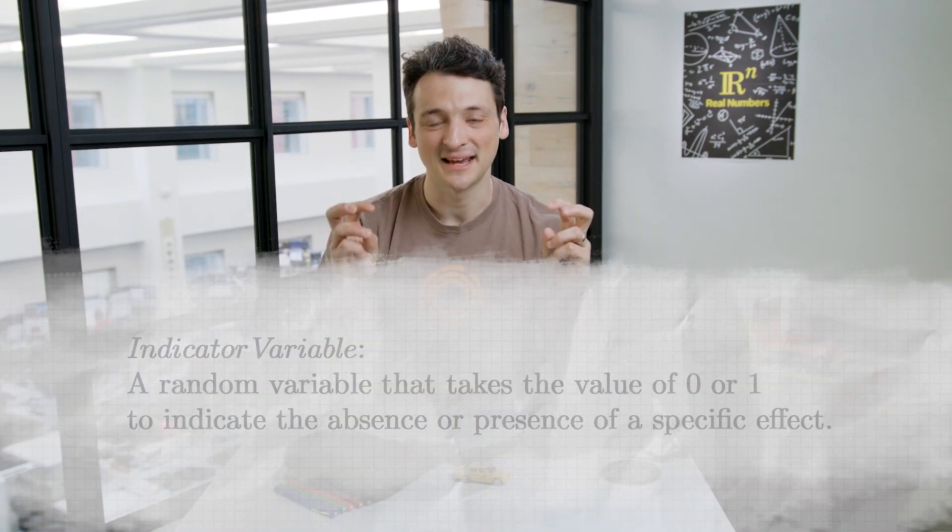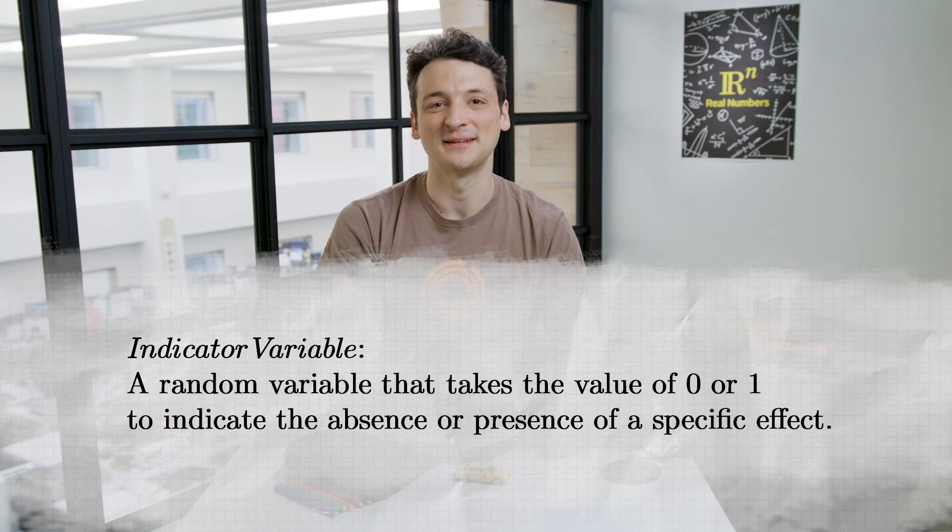These variables, which are 1 when a certain condition holds, and 0 otherwise, are called indicator variables, and come in handy when breaking up a complicated random variable into simpler parts.